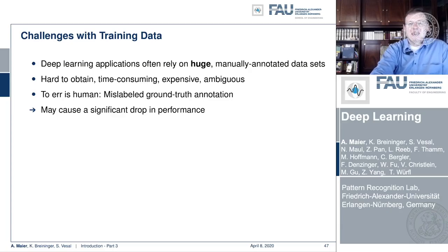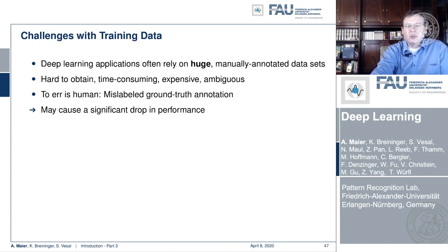The reason for this is a couple of challenges, and one major challenge is training data. Deep learning applications require huge manually annotated datasets, and these are hard to obtain — they're time-consuming, expensive, and often ambiguous. As you've seen in the ImageNet challenge, sometimes it's not clear which label to assign, and you would have to assign two labels or a distribution of labels.